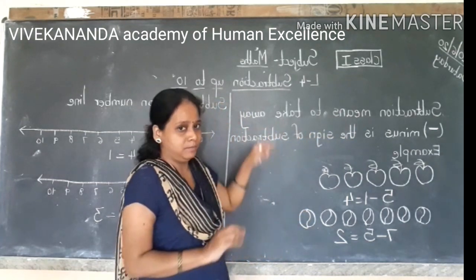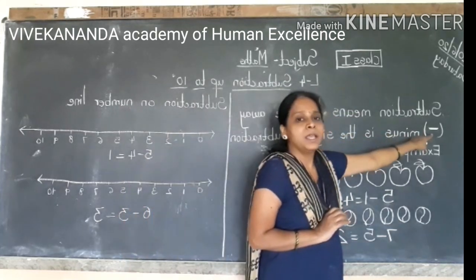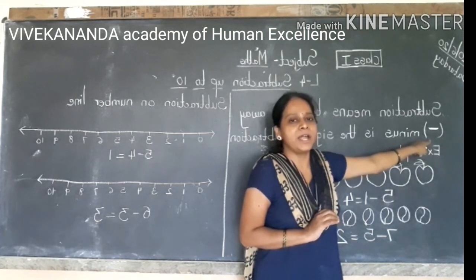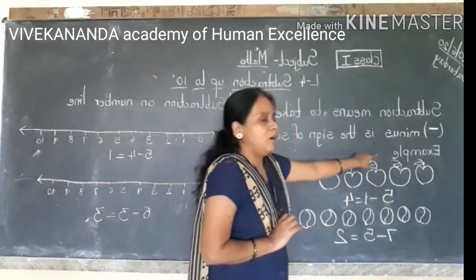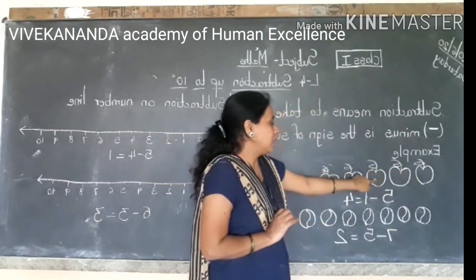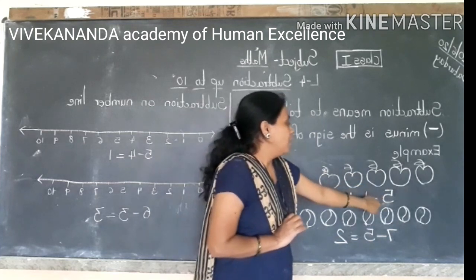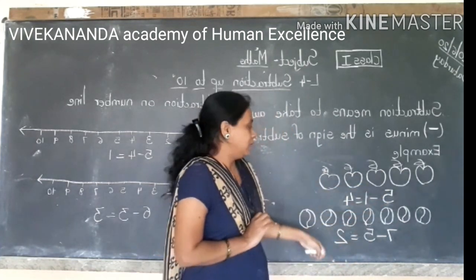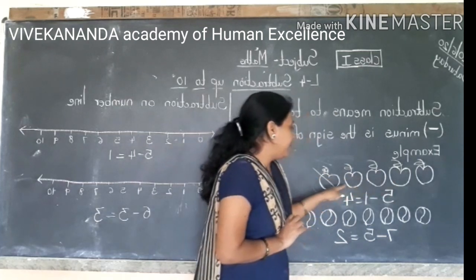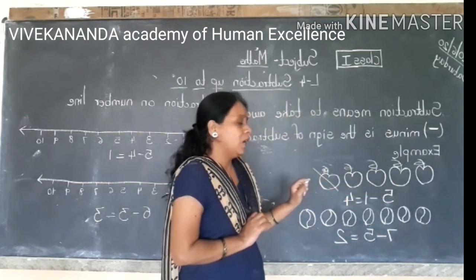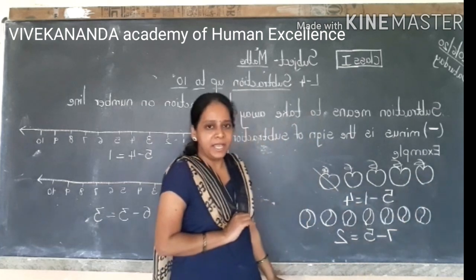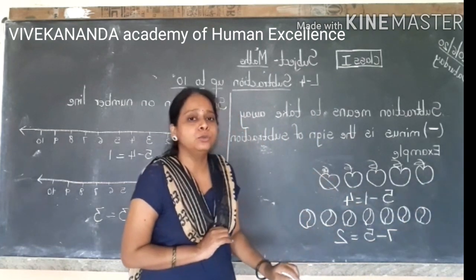Minus sign — ये sign देखना बहुत जरूरी है students. जब भी आप कुछ solve करते हो, please look at the sign. Here I have given you the example — count these apples: one, two, three, four, five. Five apples are there. Now, this one apple is taken by your sister. ये पाँच apples में से एक apple आपकी बहन ने ले लिया. तो आपके पास कितने apples बचे? One, two, three, four. In this way you have to do the subtraction.